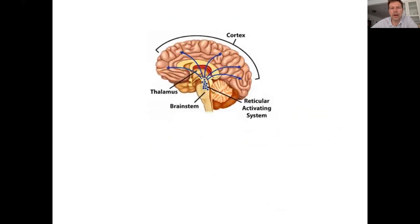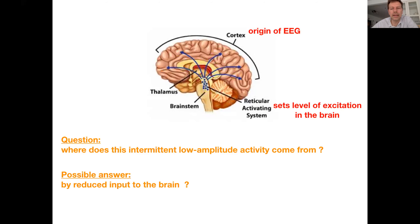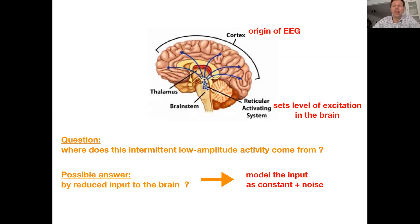Thinking about the brain, the EEG is measured in the cortex, and of course there are subcortical areas, and importantly the reticular activating system. It is well known that the reticular activating system sets the level of excitation in the brain. Our hypothesis is that the reticular activating system has some fluctuations, and these fluctuations represent short reductions of external input to the cortex — because we know it excites the cortex, especially under anesthesia where there are strong fluctuations of this excitation level.